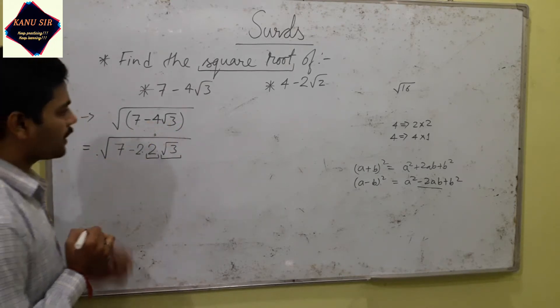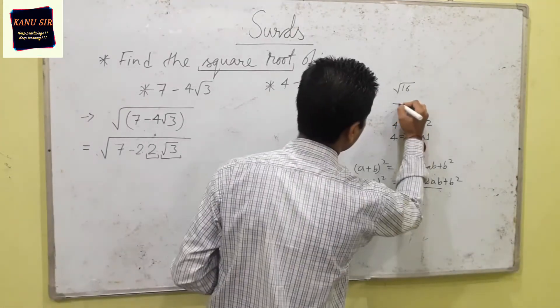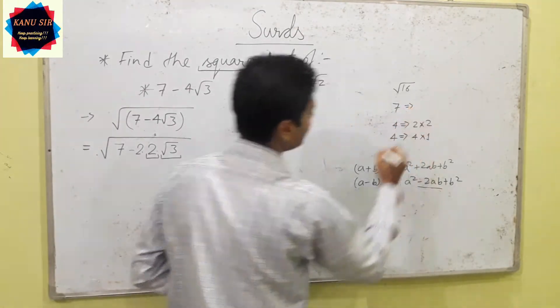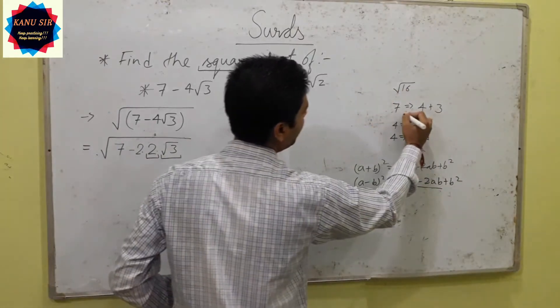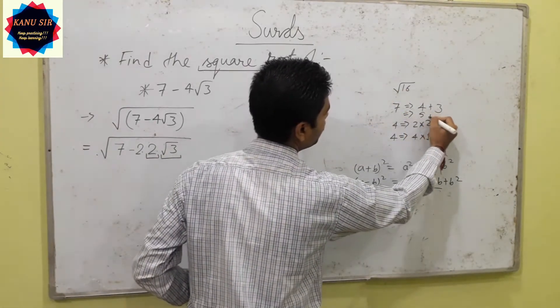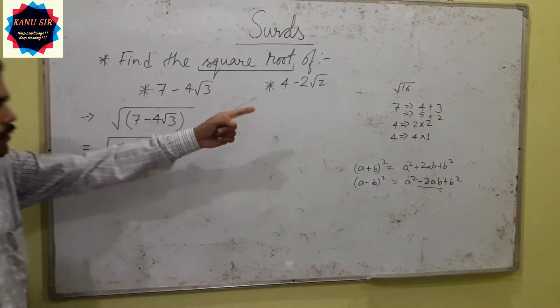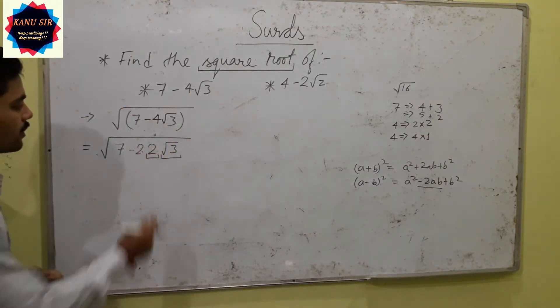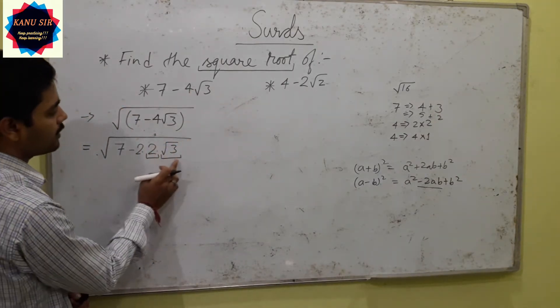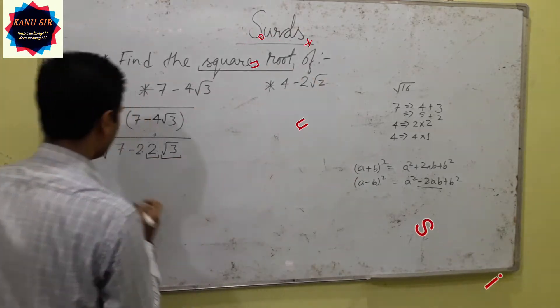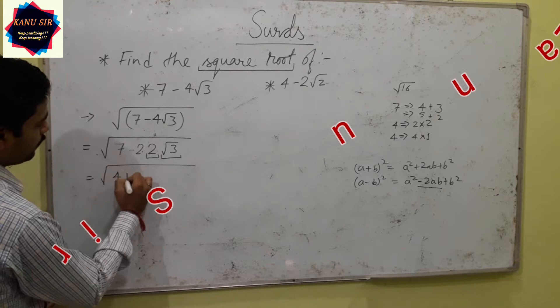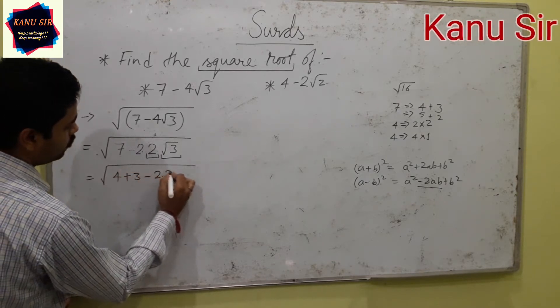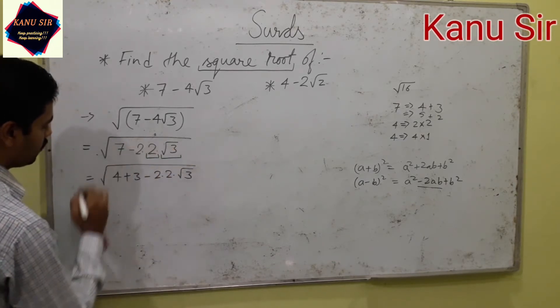Let's break 7 then. How can we break 7 in addition and subtraction form? We can break 7 as 4 plus 3 or 5 plus 2. But 4 plus 3 will be matching because the square of 2 is 4 and the square of root 3 is 3. Then we can break 7 as 4 plus 3 minus 2 times 2 times root 3.